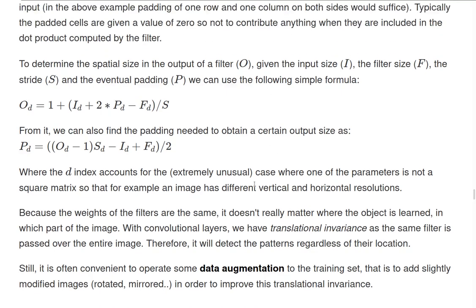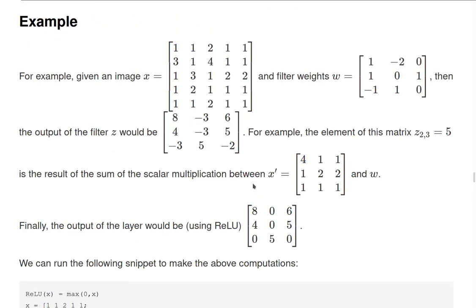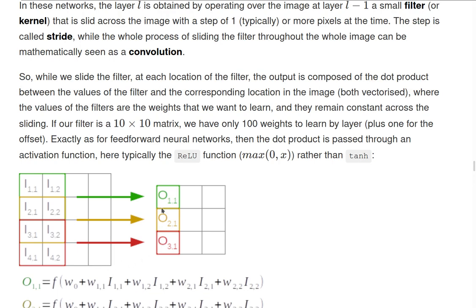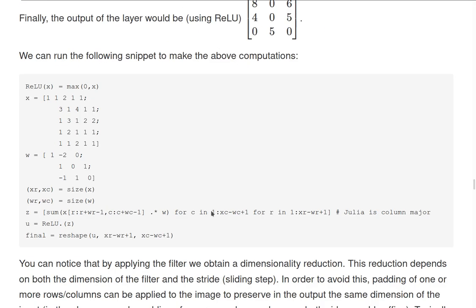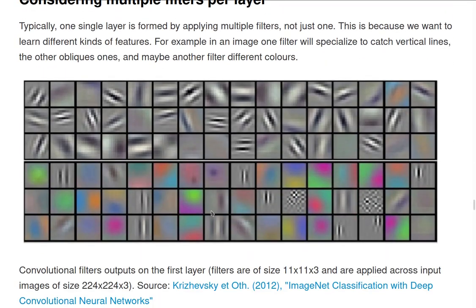What we saw above is using a single filter going through the image. Typically in a layer we have several filters, and they learn the weights. They will be trained to learn different features of the images.